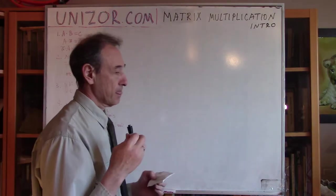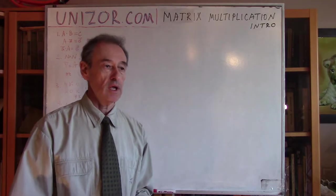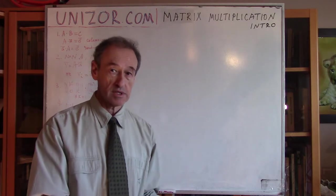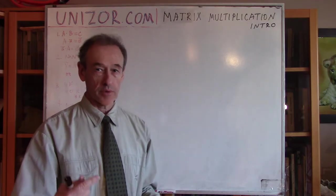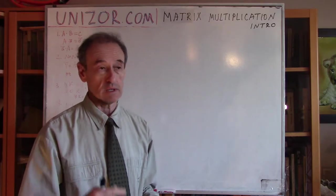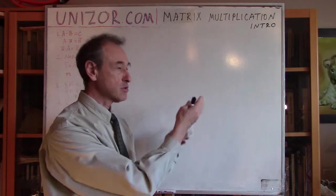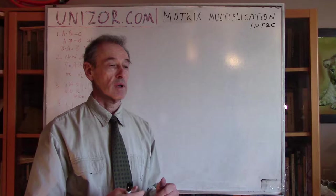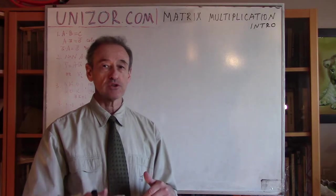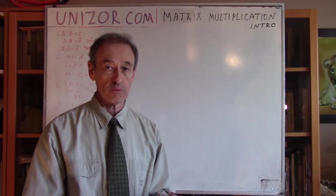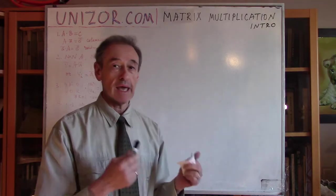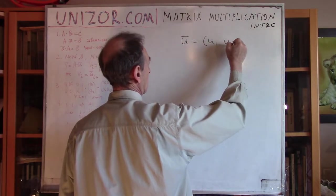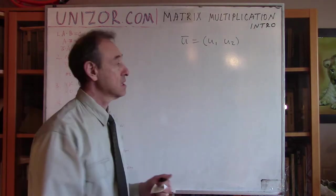Multiplication of matrices in general is an operation which takes two operands — two matrices — producing the third operand, basically the third matrix. I was just talking about transformation of vectors using matrices, and now I mentioned that matrix multiplication is an operation on two matrices. But look at it this way: any vector can actually be viewed as a matrix.